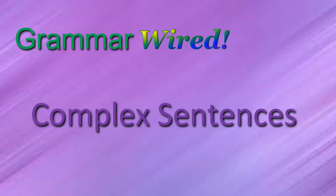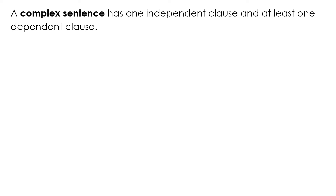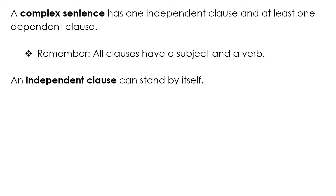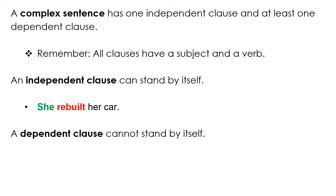A complex sentence has one independent clause and at least one dependent clause. Remember, all clauses have a subject and a verb. An independent clause can stand by itself — for example, 'She rebuilt her car.' A dependent clause cannot stand by itself — for example, 'When she was staying at her mom's.'